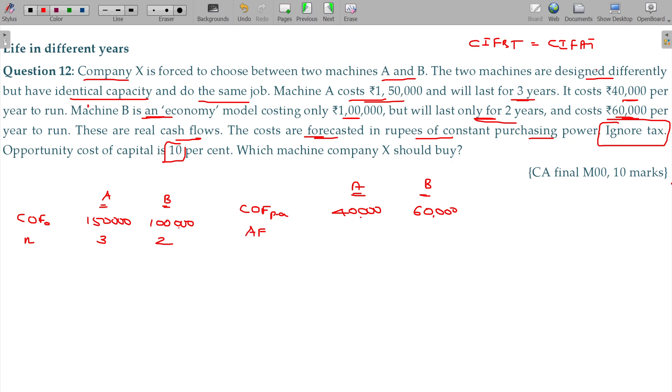Now, what is the annuity factor? A being having life of 3 years, 3 year annuity factor. B, 2 year annuity factor. 3 year annuity factor 2.486. At 10%, you have to multiply these two. For A, 99,440. B, 1,04,100.